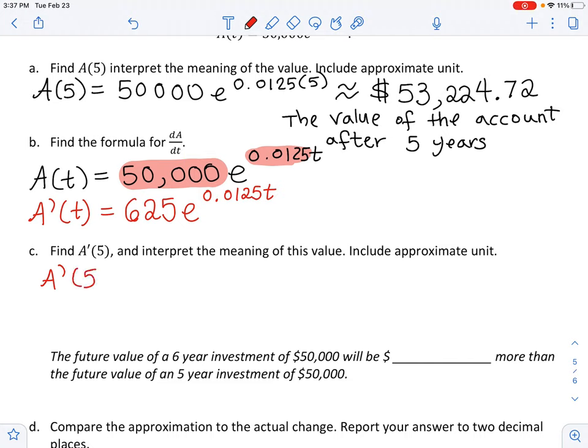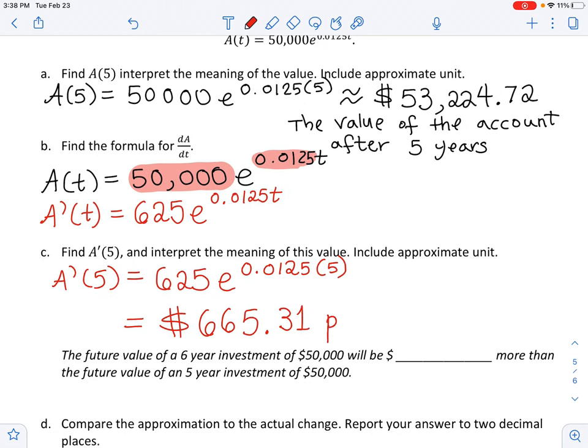So what is A prime of 5? Let's plug that in. And A prime of 5 is 625 times e raised to the 0.0125 times 5. And you will need your scientific calculator to do this. All right, let's type that in. 625 times e raised to the 0.0125 times 5. And that comes out to be, I'm going to have to round this, $665. And the next number is 309. So I'll round that 9 up and give them 31 cents instead of 30 cents. So this is $665.31 per year.